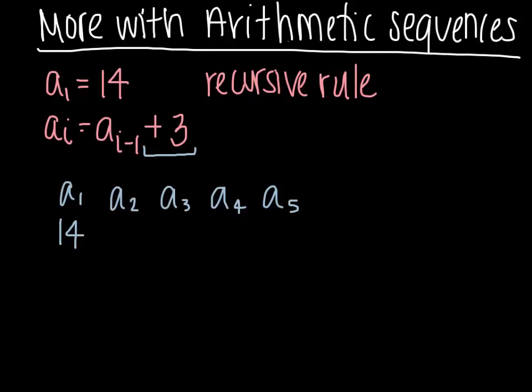So this rule says: take the term that comes before the one you want - that's a sub i minus 1 - take the term before the one you want, and add 3 to it.